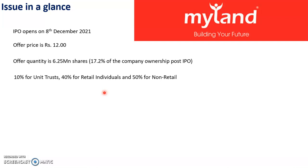The allocation basis is 10% unit trust wealth, 40% retail individuals allocated, and 50% non-retail individuals allocated. The monkey was a small issue — 6.25K is small, but 40% of retailers are allocated.